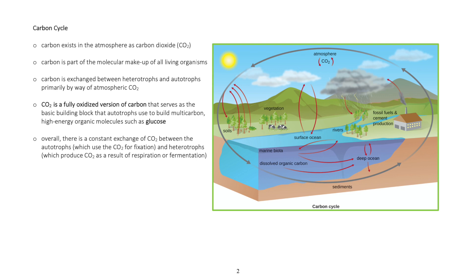Overall, there is a constant exchange of carbon dioxide between the autotrophs, which use the carbon dioxide for fixation, and heterotrophs, which produce carbon dioxide as a result of respiration or fermentation.